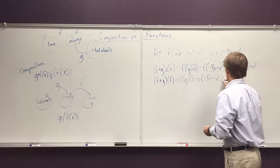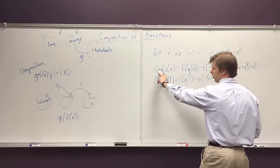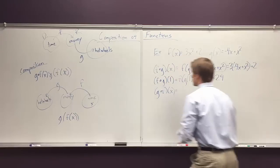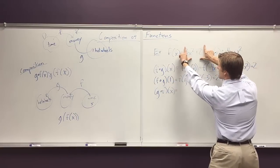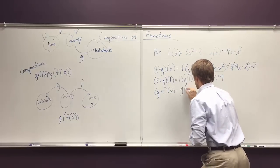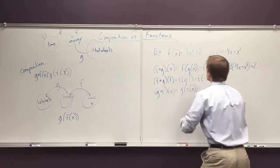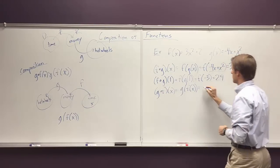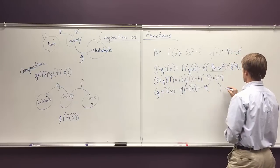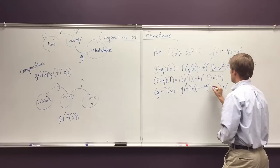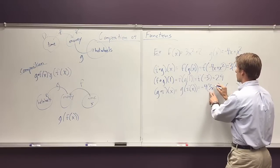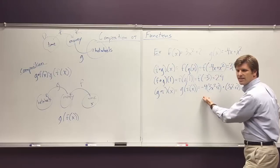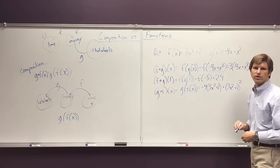One last example. Notice this order is not set in stone. If I wrote g of f of x, this has an interesting feature: the input function is f of x now, right? You could if you wanted to, you could write this. Again, you don't have to. This is the input, it goes in for every input here, so that's negative 4 times whatever the input is plus whatever the input is squared. So that's negative 4 times the quantity 3x squared plus 2 plus the quantity 3x squared plus 2 squared. I'll go ahead and leave the answer like that, though you could distribute that if you really wanted to.